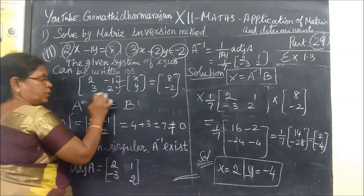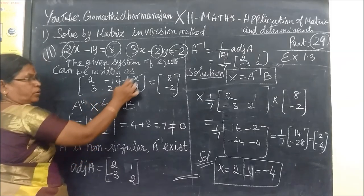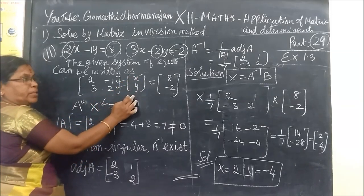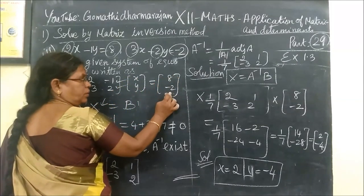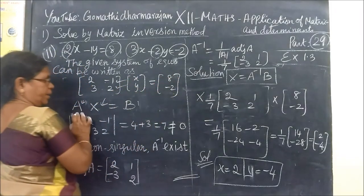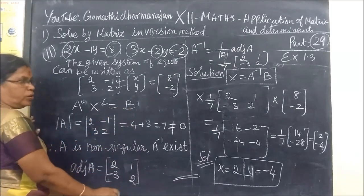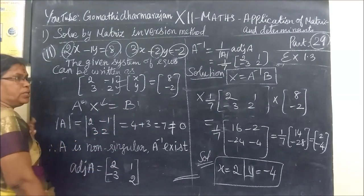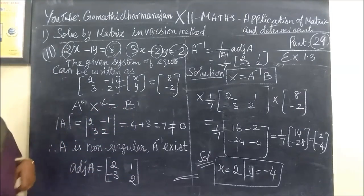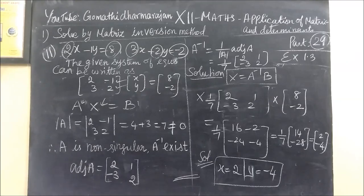So the system of equations: we are collecting the coefficients — X coefficient and Y coefficient correctly. Equation 1 is the first row, equation 2 is the second row. Then the variable says, with constant term added, X equal to minus 1. We are doing all these cells.